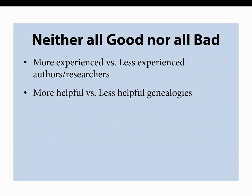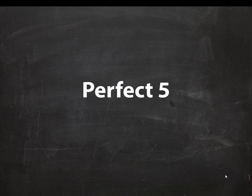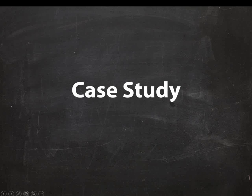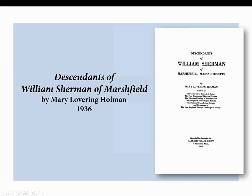There's never an entirely good nor entirely bad genealogy, so we're going to talk about more experienced and less experienced authors and more helpful and less helpful genealogies. Our perfect five criteria include: who's who in peer review; format, scope, completeness, and restraint; citations and sources; methodology and analysis; and access. As we go through, we'll have a case study — the Descendants of William Sherman of Marshfield, written by Mary Lovering Holman in 1936.